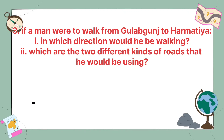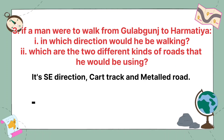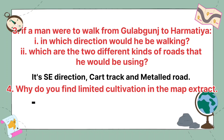If a man were to walk from Gulabganj to Harmatya, in which direction would he be walking? Which are the two different kinds of roads that he would be using? The direction is south-east. He would be using two types of roads: one is a cart track and another one is a metal road.